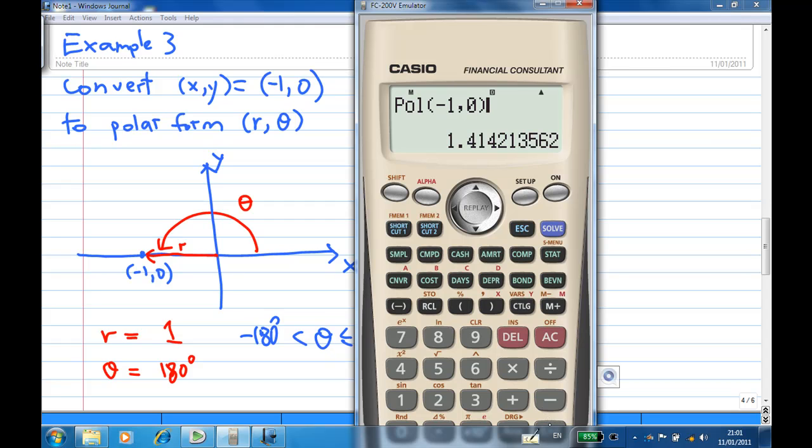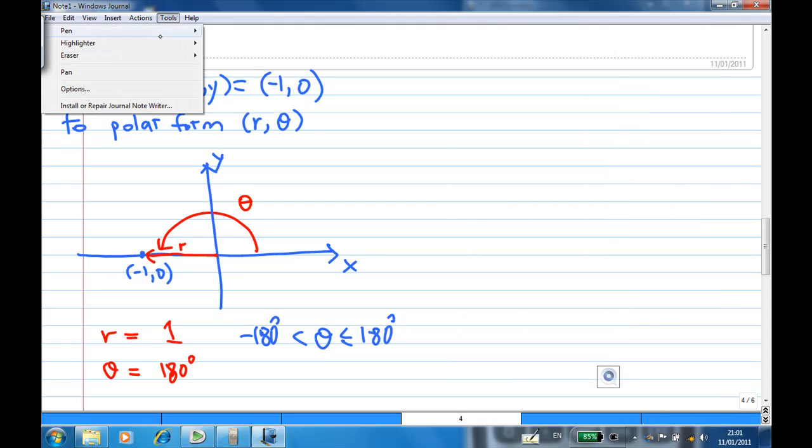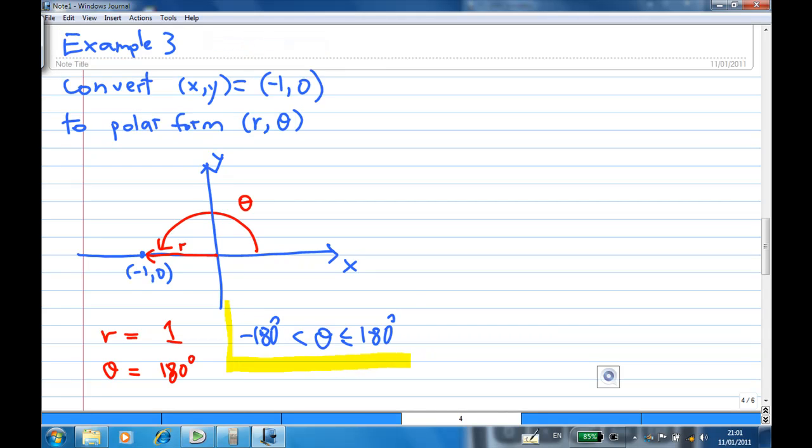Let's try to convert to the polar form and see what you get. You'll find that r is equal to 1, θ equal to 180 degrees as promised. This confirms that the calculator gives you the range of the polar form in degree mode. The angle will be from minus 180 to 180, excluding minus 180.